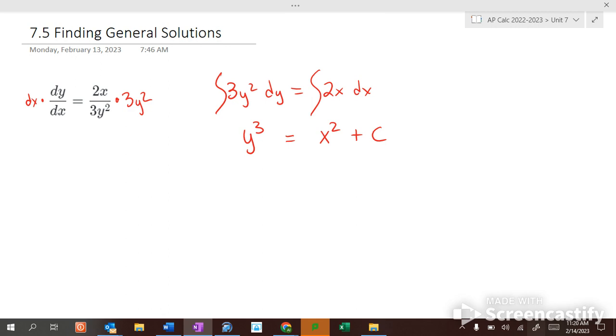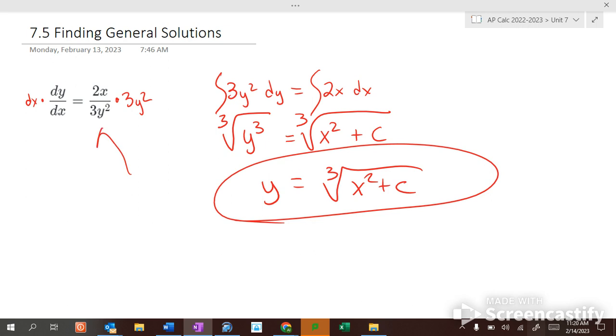And then we get y alone. How do we get y alone? We take the cube root of both sides, so y equals the cube root of x squared plus c. That's the general solution of that equation.